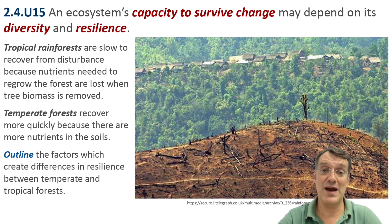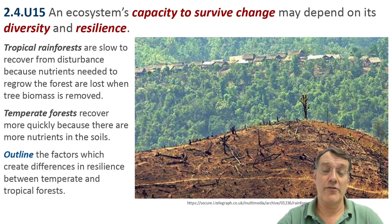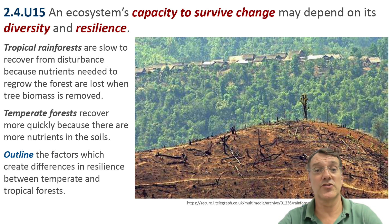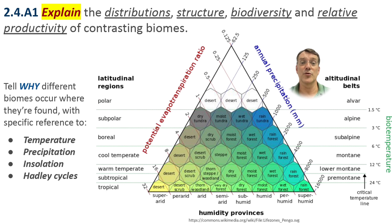An ecosystem's capacity to survive change depends on its diversity and resilience. Tropical rainforests, despite their high biodiversity, recover slowly from disturbance because most nutrients are stored in vegetation rather than in soils. Temperate forests often recover more quickly because they have more nutrients in the soil to support regrowth. To explain biome distributions, you have to consider temperature, precipitation, insolation, and global air circulation patterns. This diagram shows how these factors interact to create the climate conditions that support different biomes.